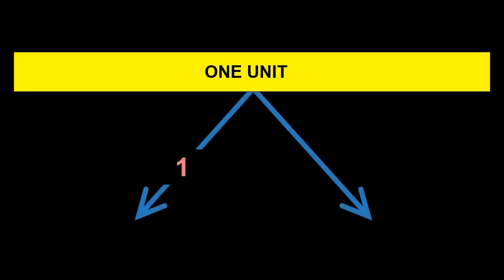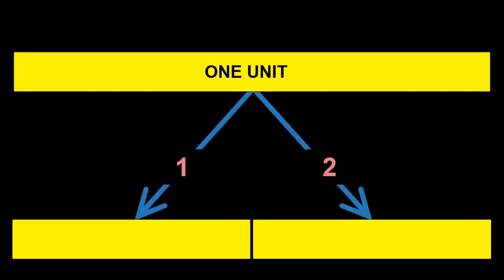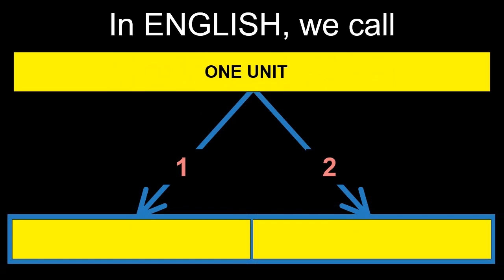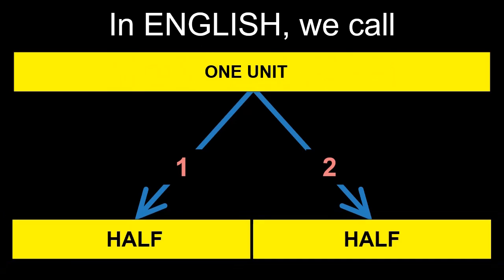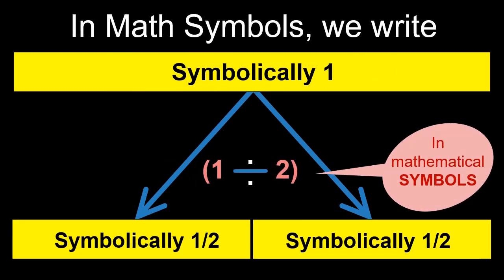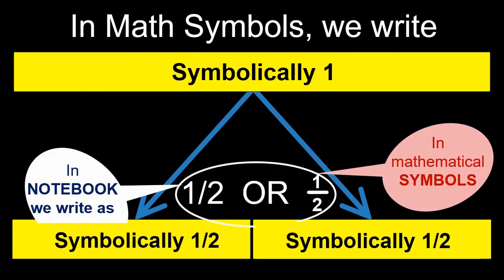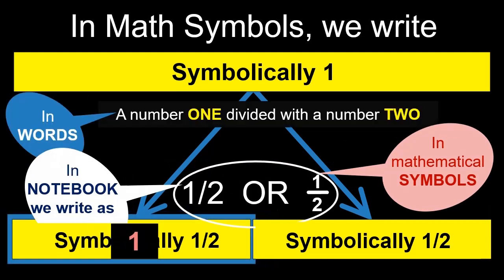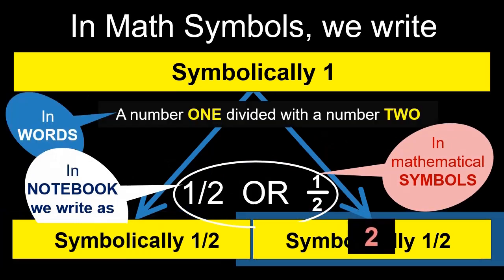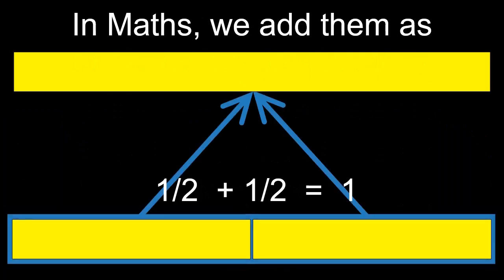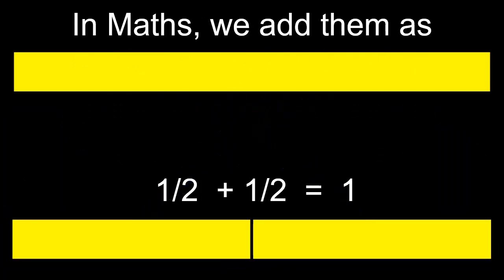Now, if we make this one unit into two equal units, we call each of them as half. Symbolically, we represent the same thing as one divided by two, and there are two such halves which when added together results the same single quantity.